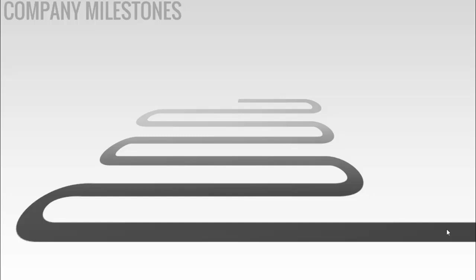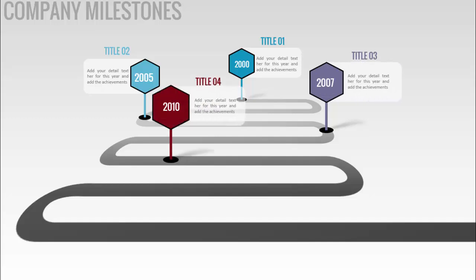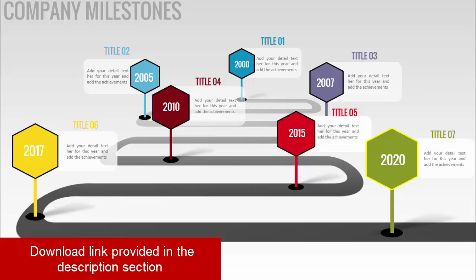In today's tutorial I'm going to show you how to create a company milestone slide in PowerPoint. This is how the slide looks — I've created a curved road where each milestone appears on mouse click. When I click you can see the first milestone of the year 2000, then 2005, 2007, 2010, 2015, 2017, and the last milestone of 2020.